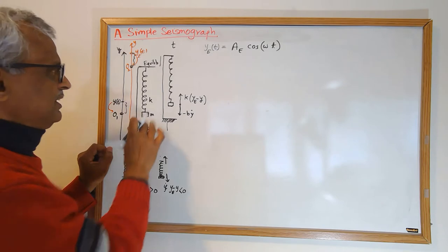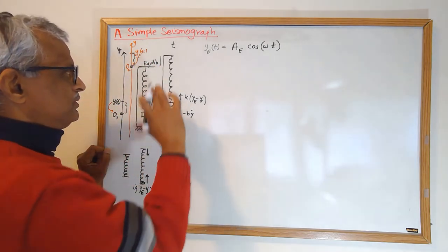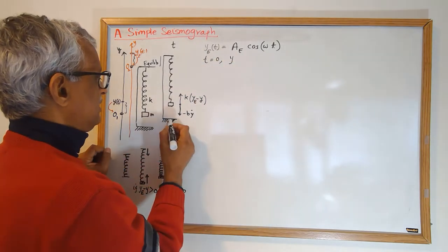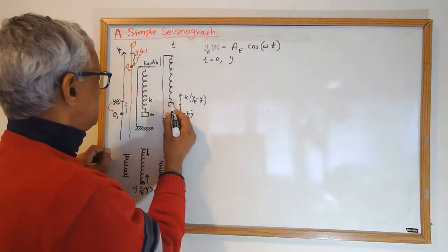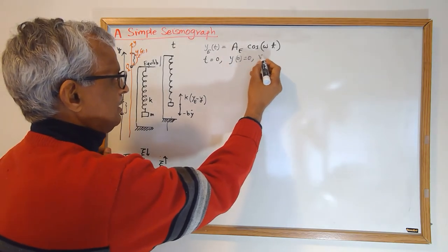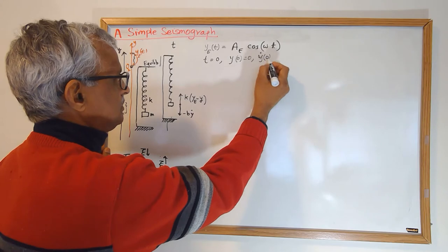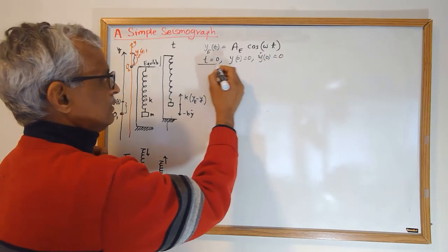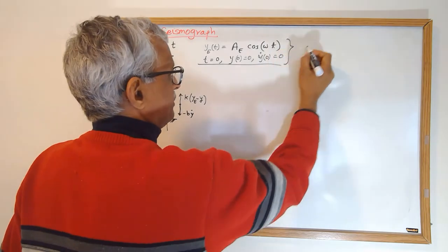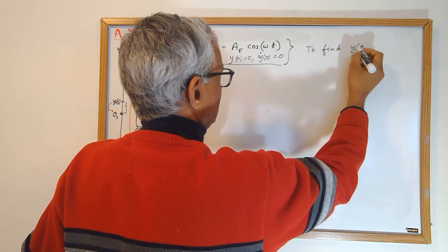We'll also say that this system was resting at t = 0: y(0) = 0 and ẏ(0) = 0. Those are the given initial conditions. What we want to find is y(t).